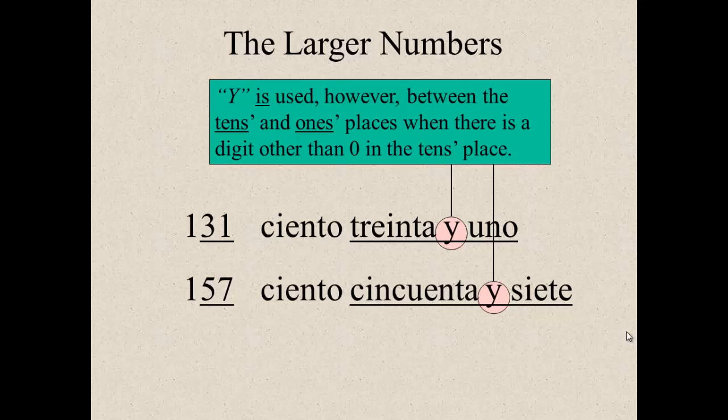The y is used, however, between the tens and the ones place when there's a digit other than zero in the tens place. For example, one thirty-one. In Spanish, they say one hundred thirty and one. So, ciento treinta y uno. For one fifty-seven, ciento cincuenta y siete. So, you do use it between the ones and tens place.